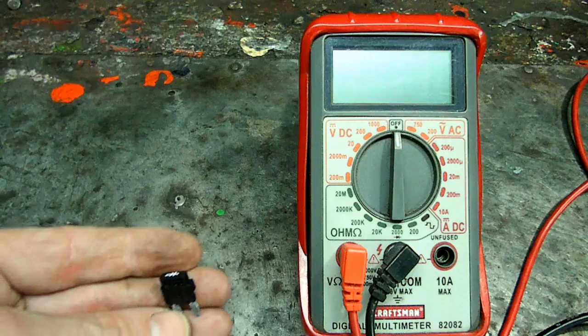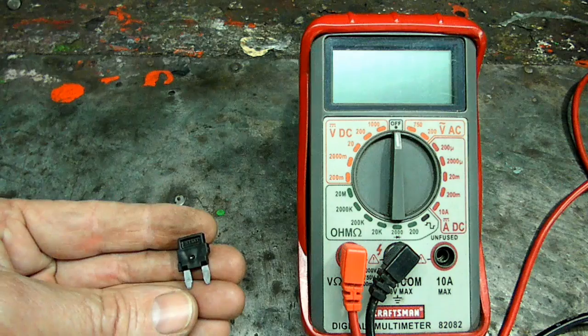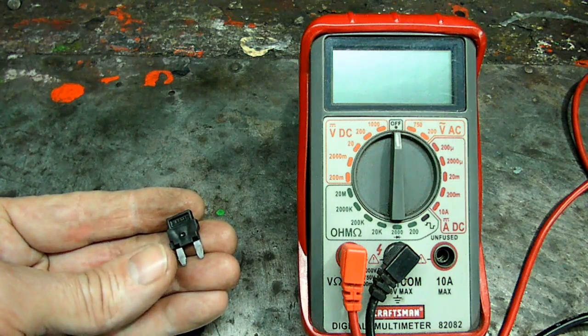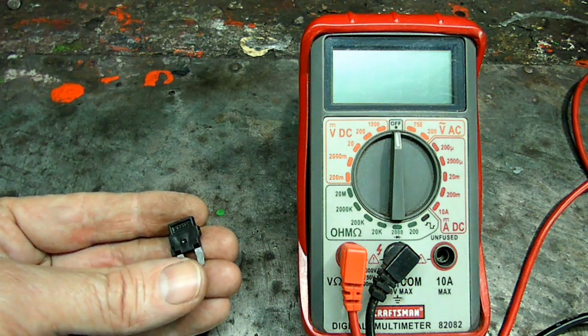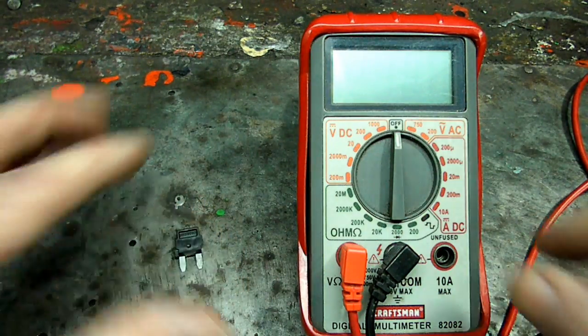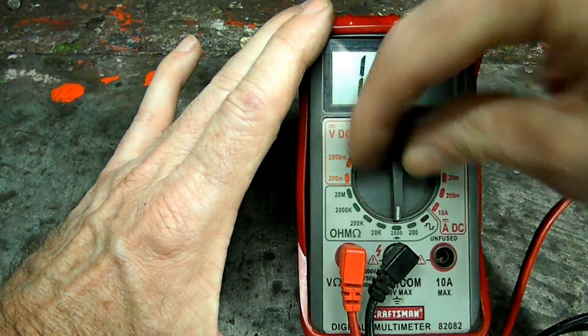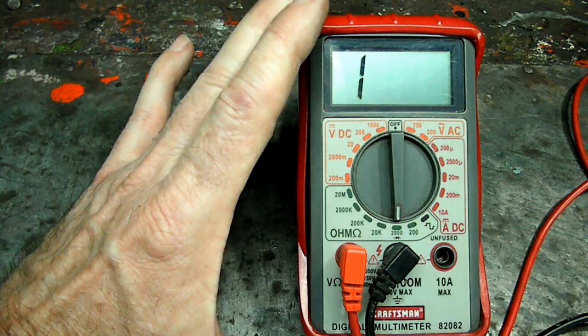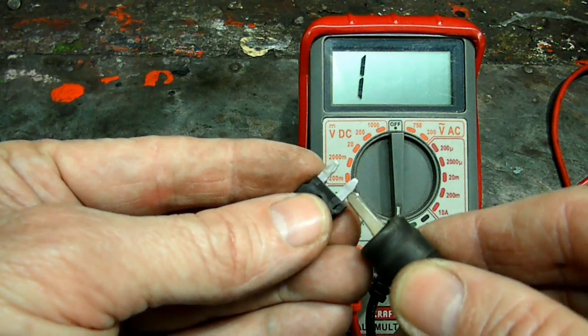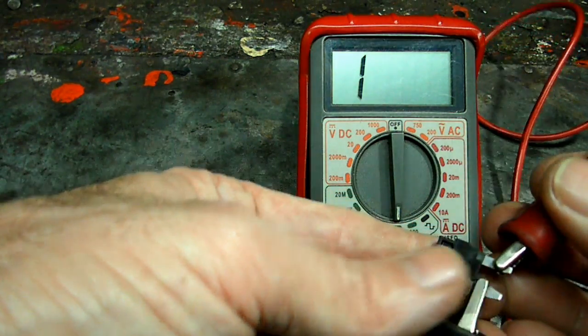Now the next thing we can check with our meter is a diode. Now what a diode is, it's basically a gate. It lets voltage go through one way but it will not let it go back the same way. So we're going to take the meter, go down here to the symbol that shows the diode right there at 2,000. We'll take one end of the lead and take the other end.